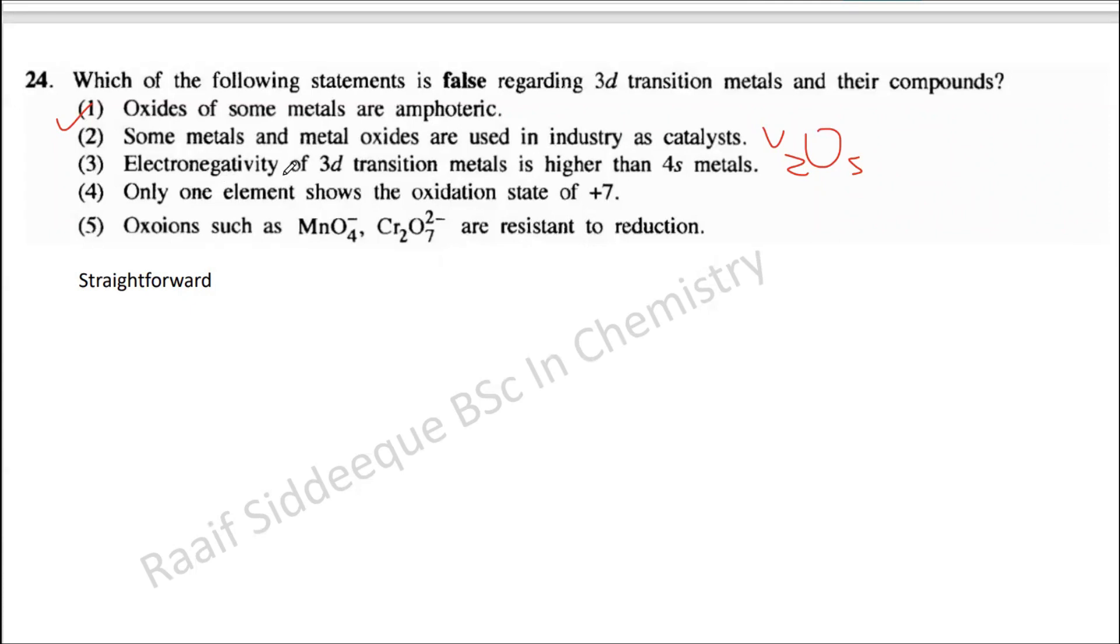The electronegativity of 3D transition metal is higher than 4S, so you know that. 4S means like potassium for an example, like hydrogen, then lithium is 2, sodium is 3, potassium. So potassium, the electronegativity is around 0.8, but 3D transition metals, you know, generally it goes from like 1.8, 2.8 range. So these values are a little bit higher.